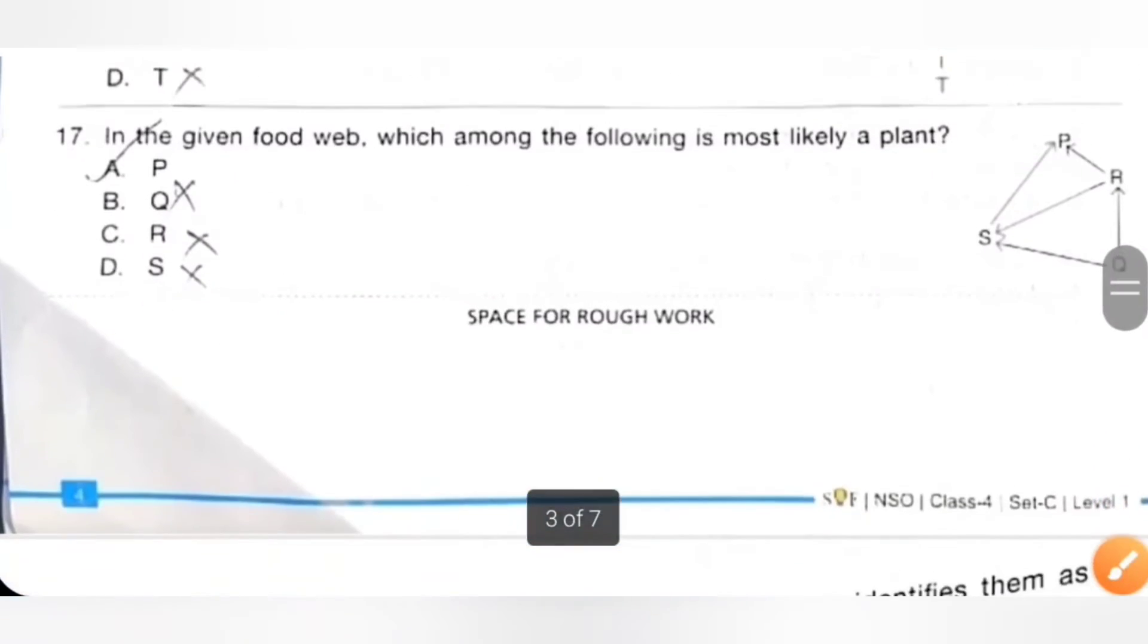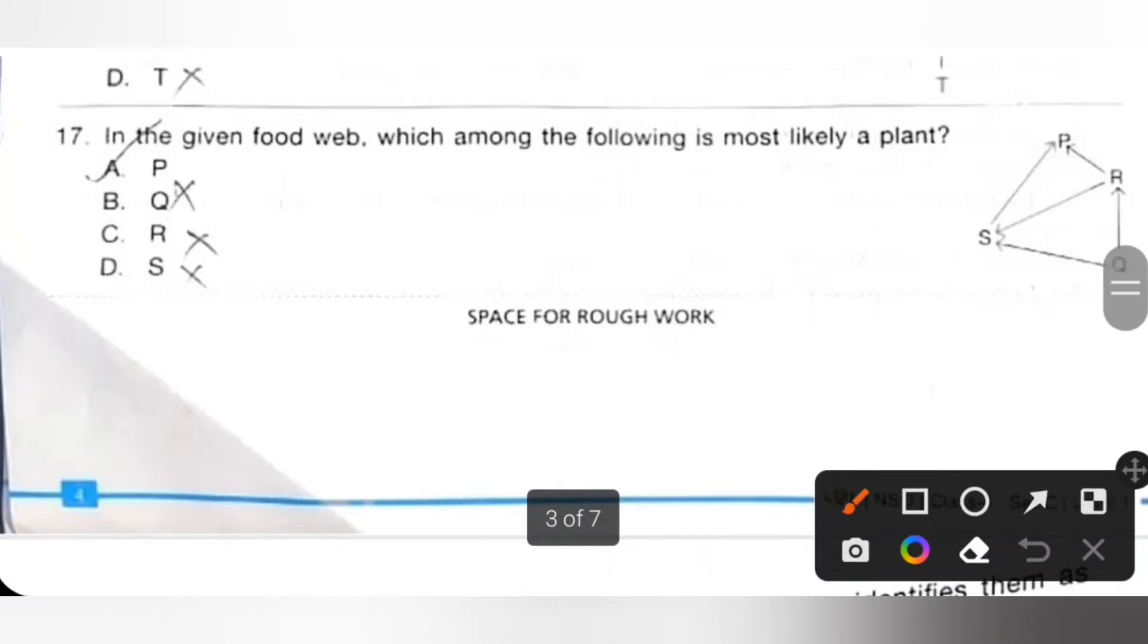Seventeenth: In the given food web, which among the following is most likely a plant? We know plant is a primary producer because it can produce its own food. So all food webs begin with plants. So Q, option B is the correct answer.